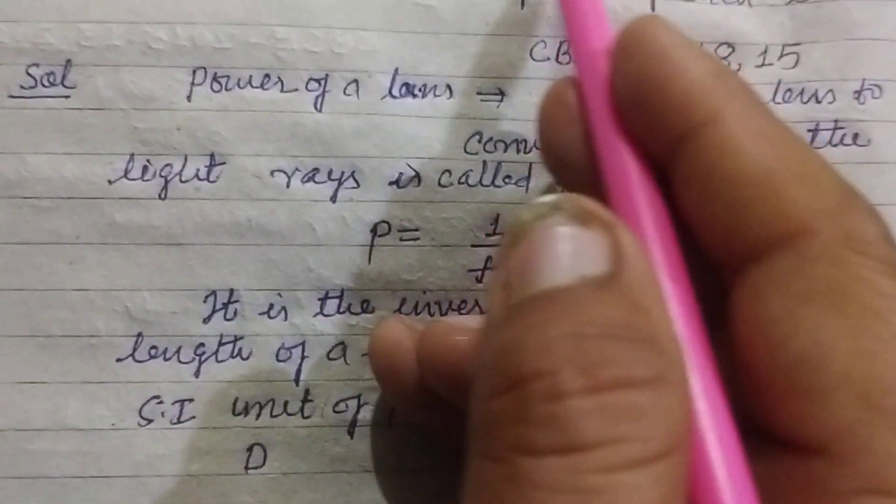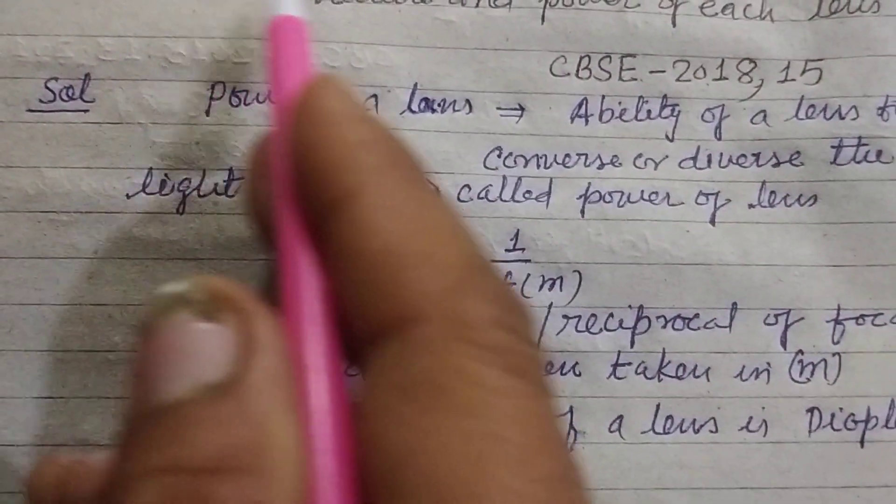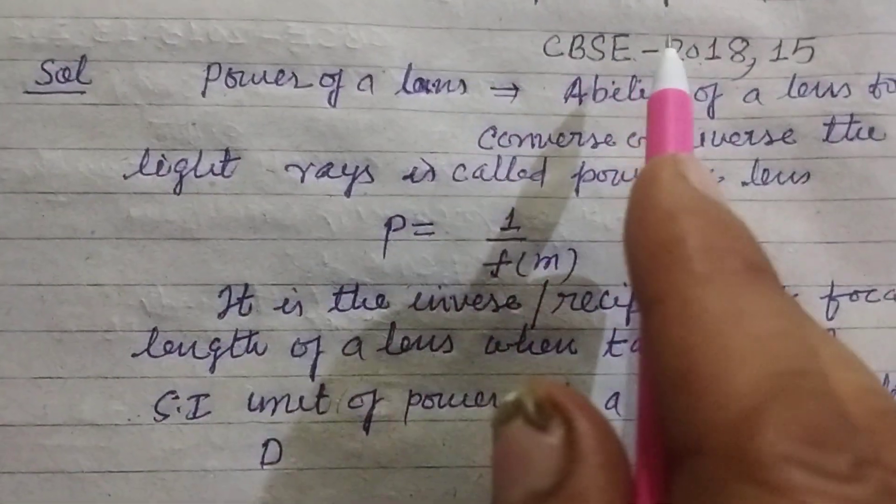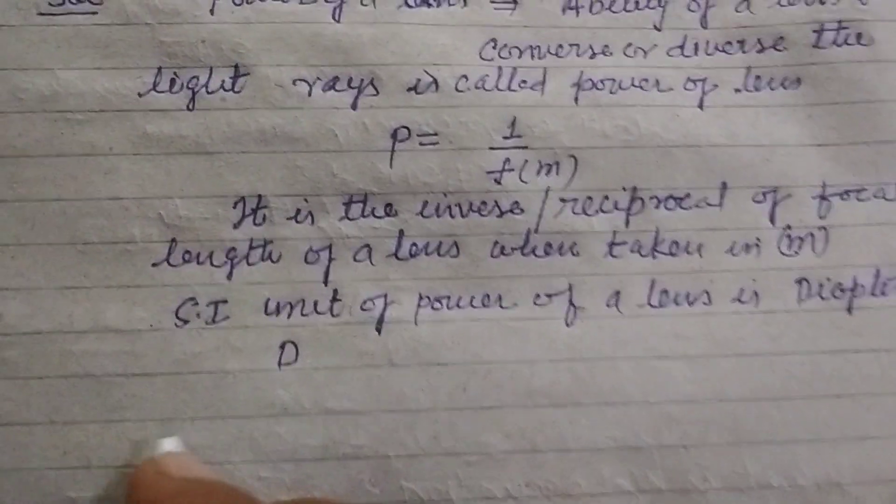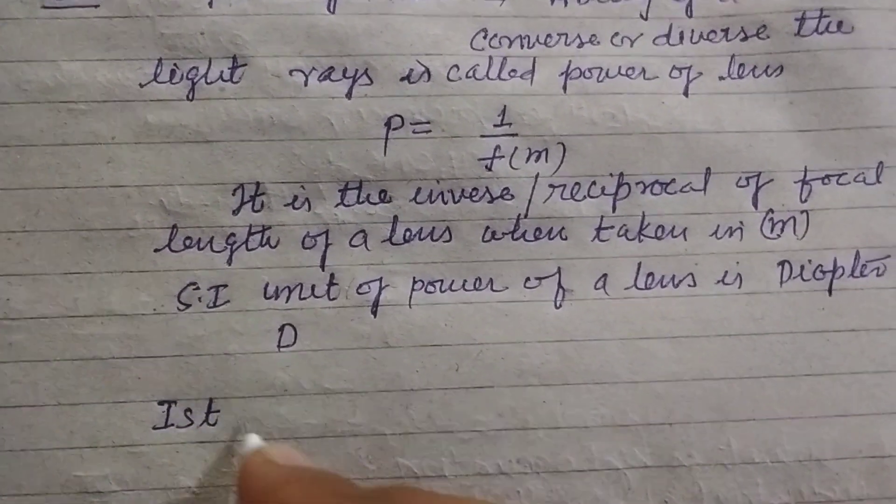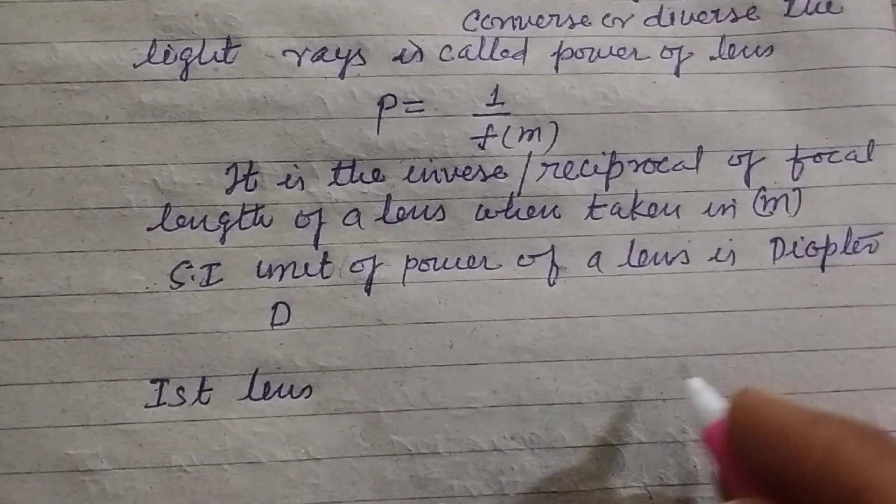Now question is saying a student uses a lens of focal length 40 cm and another of minus 20 cm. Write the nature and power of each lens. So first is first lens, second is second lens.